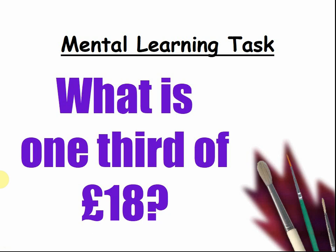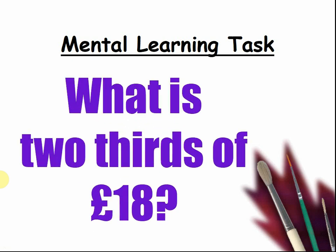What is one third of 18? Three, two, one, tell me. Of course it is six, because three times six makes eighteen. What is two thirds of eighteen? Three, two, one, tell me. The answer is twelve, because if one third of eighteen is six, two thirds is twelve.